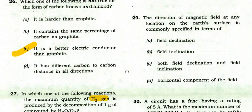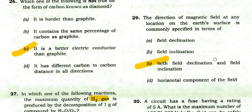The direction of magnetic field at any location on the Earth's surface is commonly specified in terms of — option C: both field declination and field inclination.